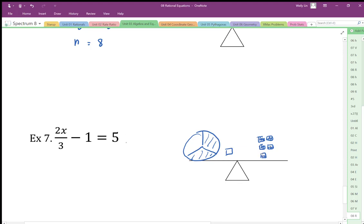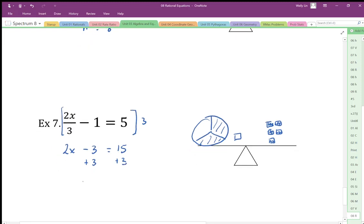Okay, so I'm going to get rid of my divide by 3 times 3. Make everything, everything, not just some pieces. We've got to make everything 3 times bigger. So I end up with a plus 3, plus 3. So 2x equals 18.